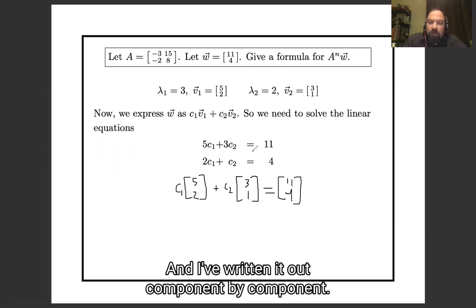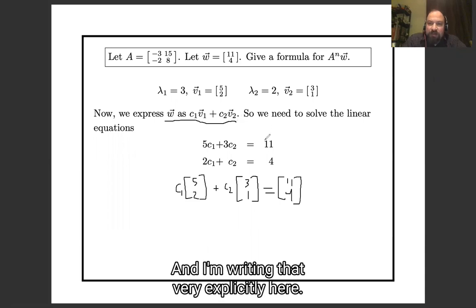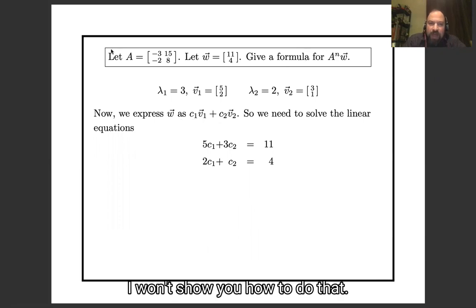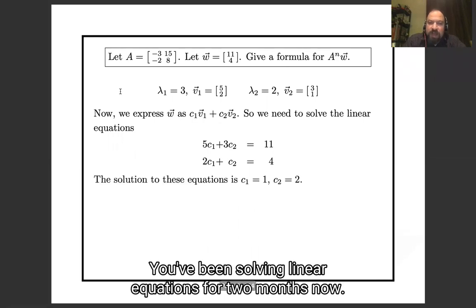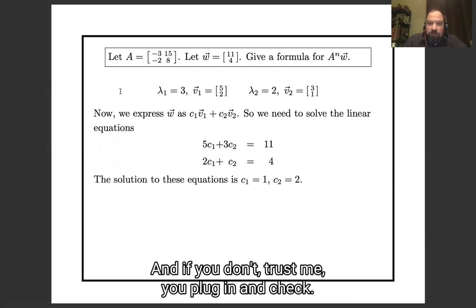So I am just writing w as c₁v₁ plus c₂v₂, and I'm writing that very explicitly here. Okay, so we need to solve these linear equations. I won't show you how to do that. You've been solving linear equations for two months now. The solution is c₁ = 1, c₂ = 2. And if you don't trust me, you can plug them in and check.